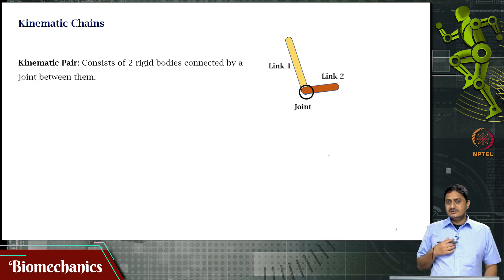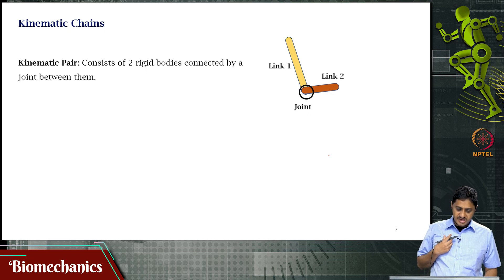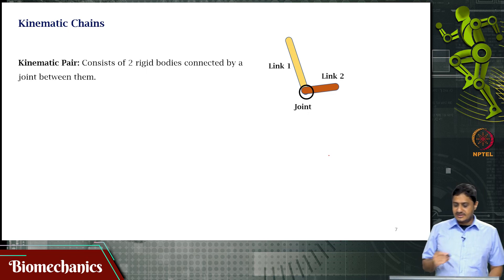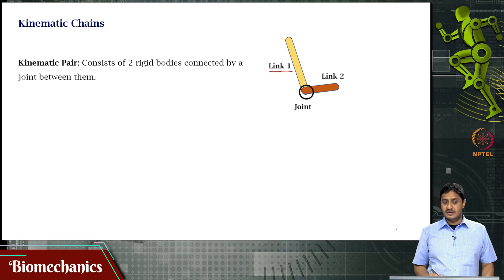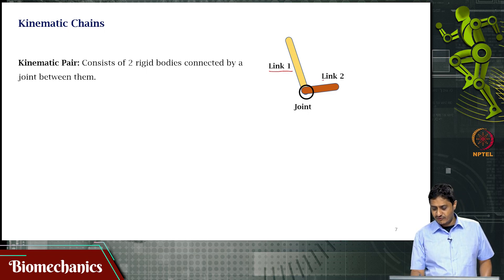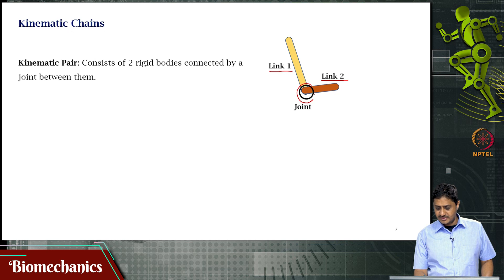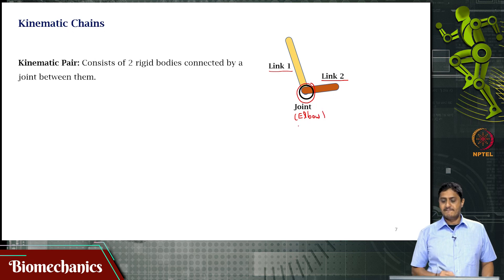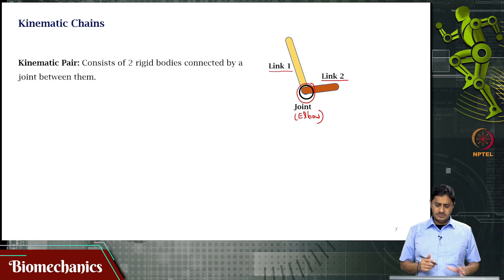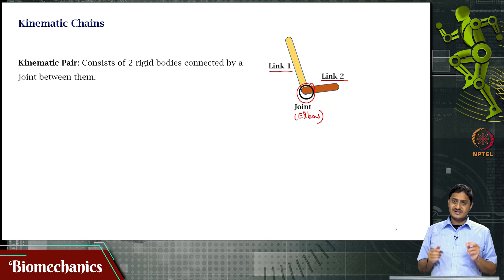While discussing reach, we are interested in analyzing the upper limb system as a kinematic chain. The upper arm is one link — a rigid body — and the forearm is another link, another rigid body. They are connected by the elbow joint. Two rigid bodies connected with exactly one joint between them is called a kinematic pair.